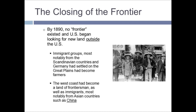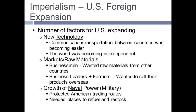They had no more availability of land in the continental United States, so they needed to expand outward. That plays into the idea of imperialism — something you learned last year in global history. Imperialism is the concept of creating an empire, expanding US foreign power and controlling other parts of the world. There were a number of factors that pushed the US to expand across the oceans.